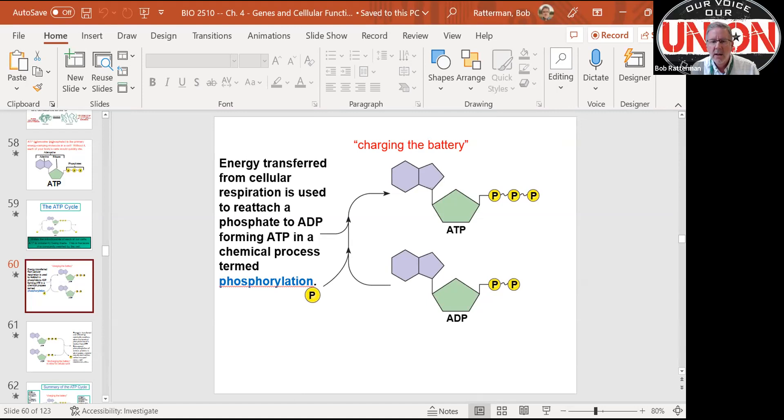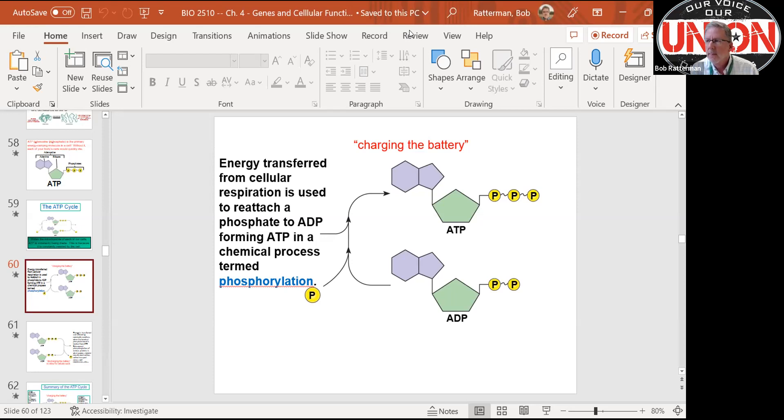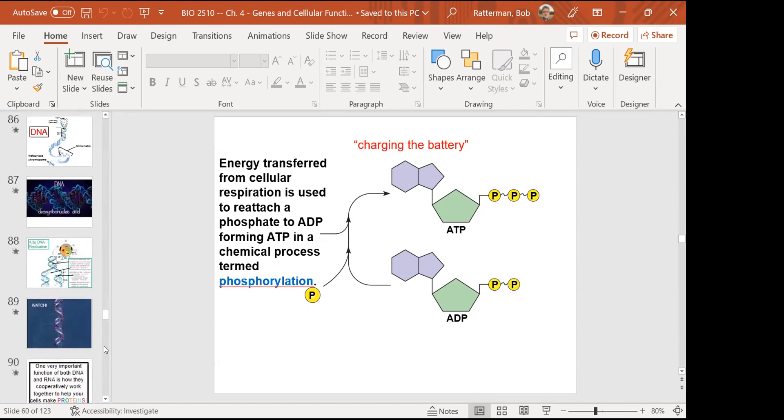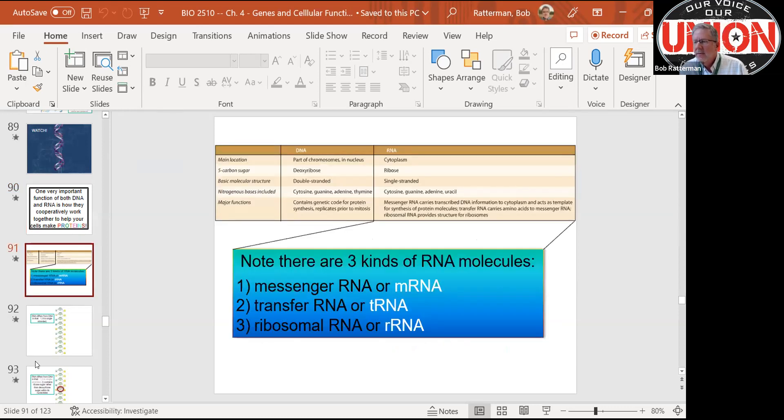How about other objectives or specific topics? Are we going to have to know the different RNAs, like tRNA, mRNA, and all that? You bet. We talked about them. You want to review that? Yes. So we're going to stay in chapter four PowerPoint and scroll down to slide 90. This is where we begin talking about how DNA and RNA work together in our cells to make proteins, like enzymes.